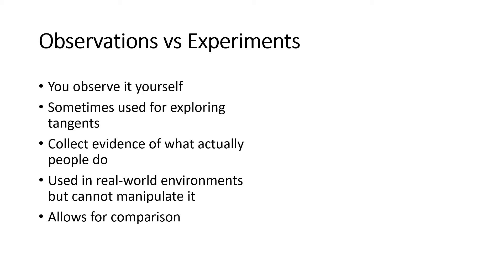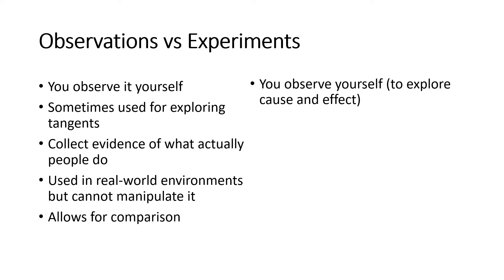Other ways to compare observations with experiments: in observations you observe naturally occurring settings, while experiments are normally used to explore cause-and-effect relationships. With observations you can explore tangents or interesting directions — maybe you started observing one research problem and found new directions to investigate. With experiments it's very challenging to start exploring another tangent; if you want to investigate something else, you'd likely need a separate experiment.